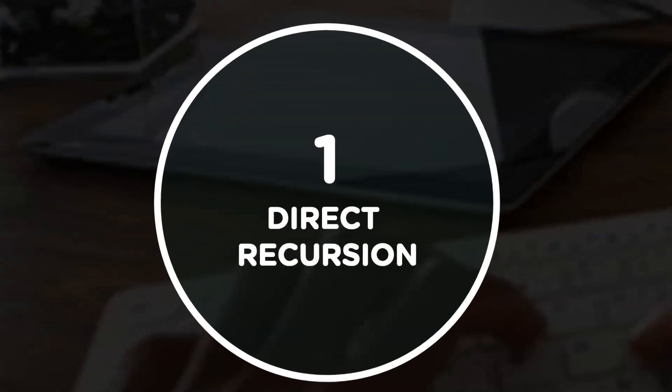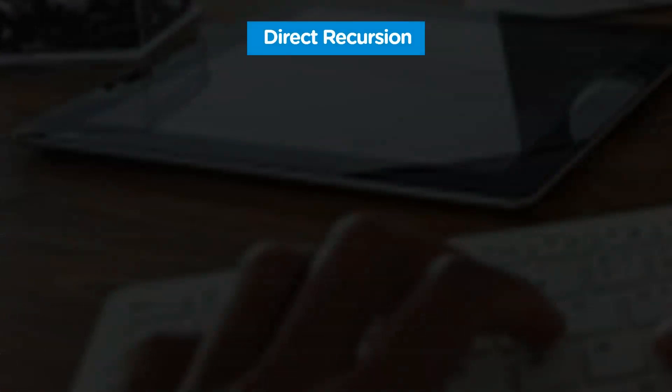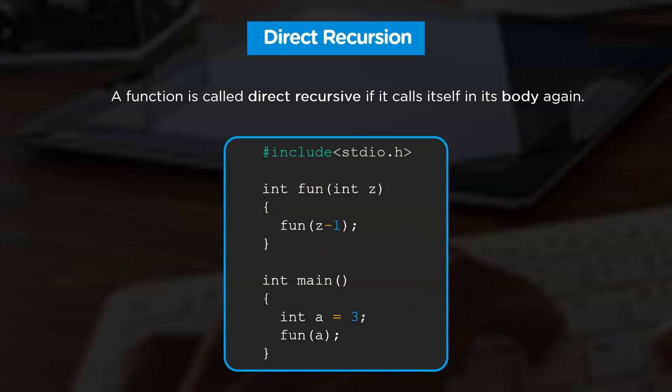So let's discuss direct recursion. A function is called direct recursive if it calls itself in its function body over and over again. To better understand this definition, let's look at the structure of a program that is direct recursive in nature. In this program, we have a method named fun which is calling itself again and again in its function body. Thus, we can say that it is direct recursive in nature.